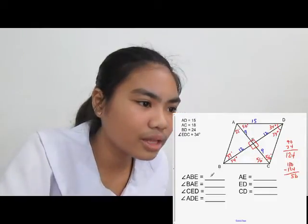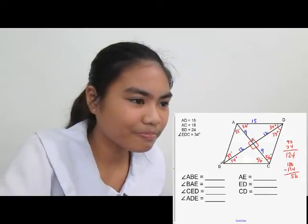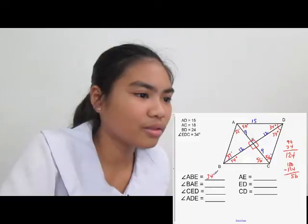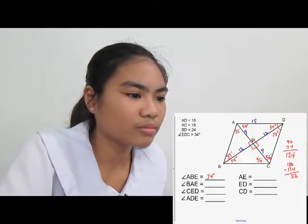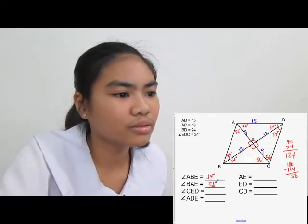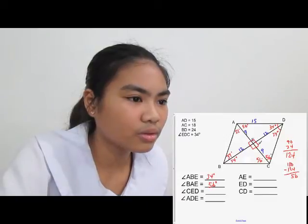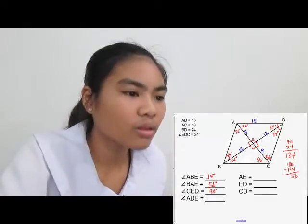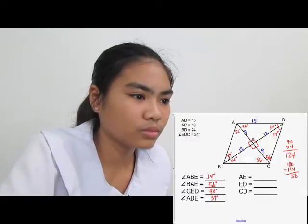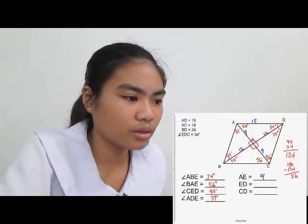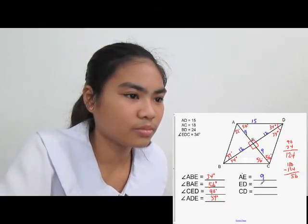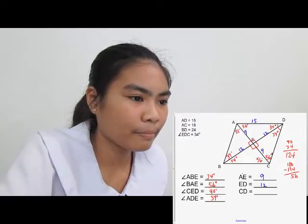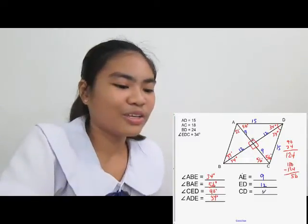Now let's answer the four questions. Angle ABE is 34 degrees. Angle BAE is 56 degrees. Angle CED is 90 degrees. Angle ADE is 34 degrees. For the sides: AE is 9, ED is 12 (half of 24), and CD is 15 since all sides of a rhombus are equal.